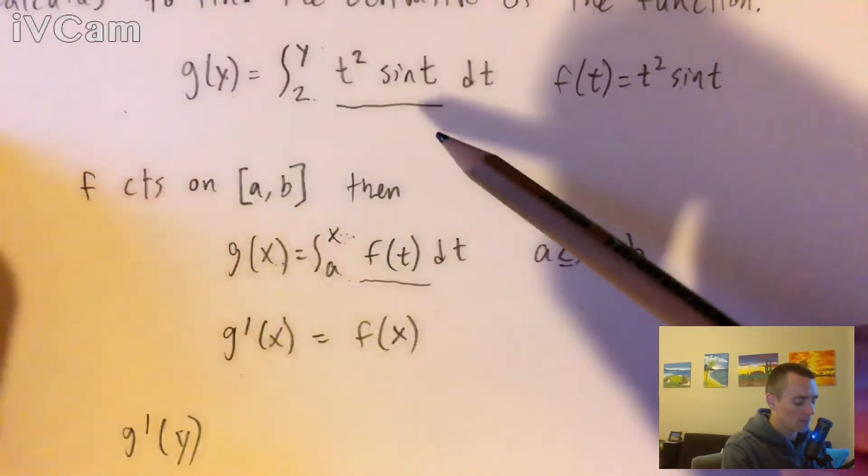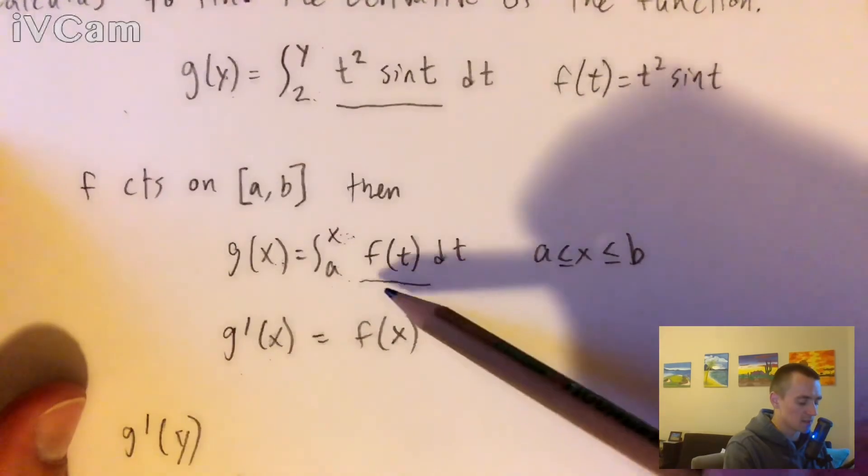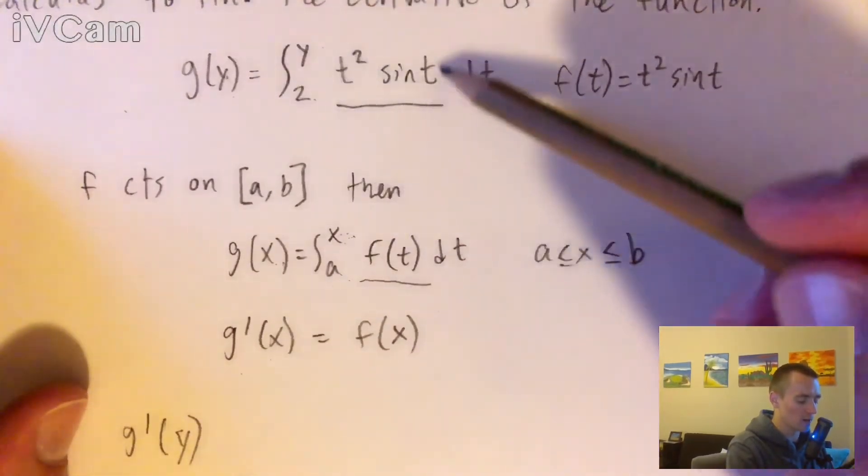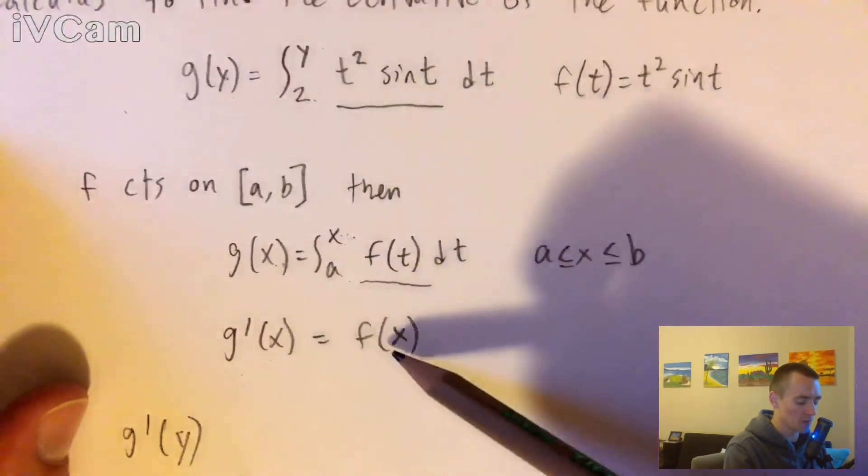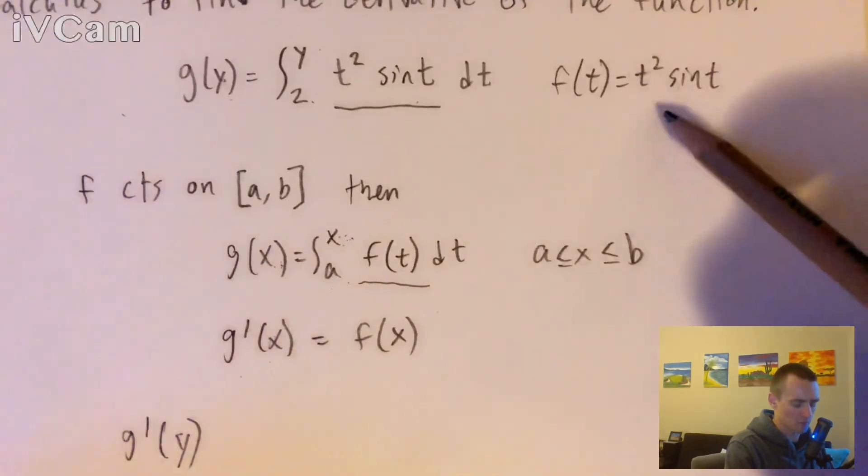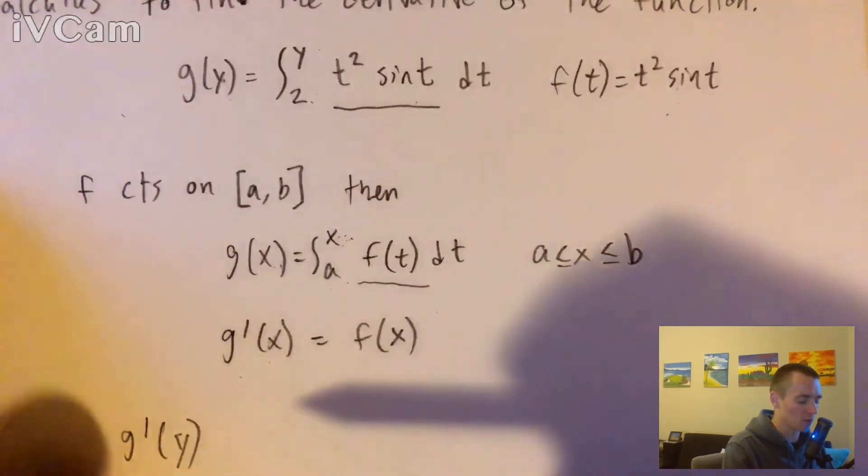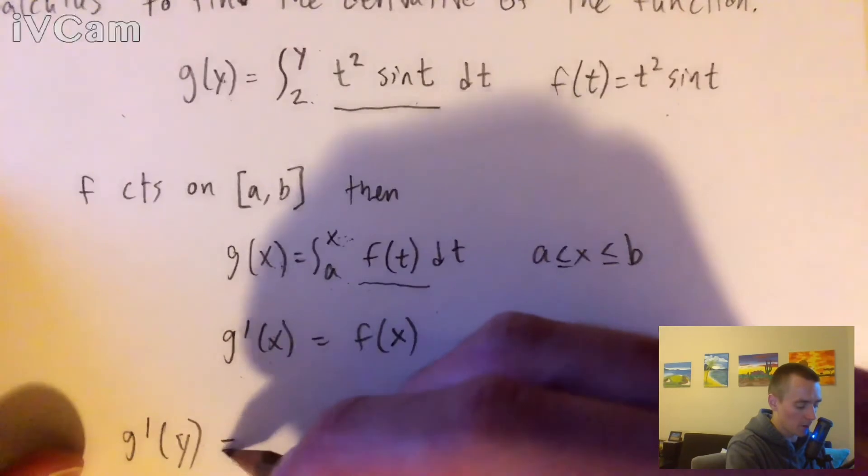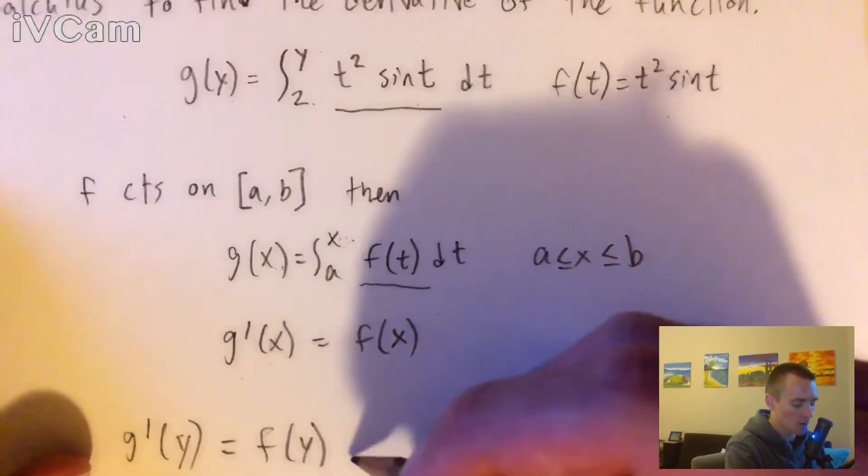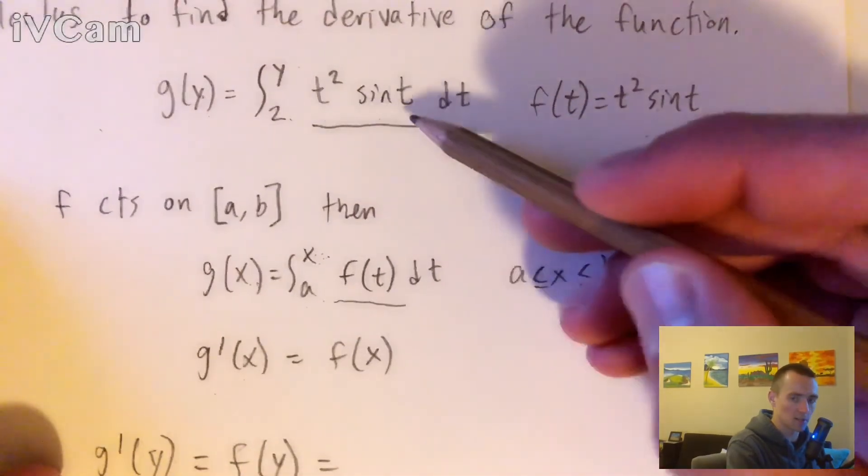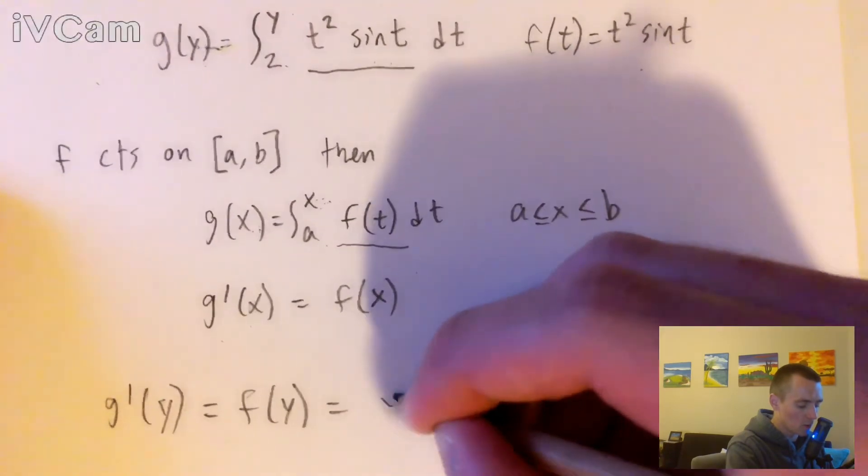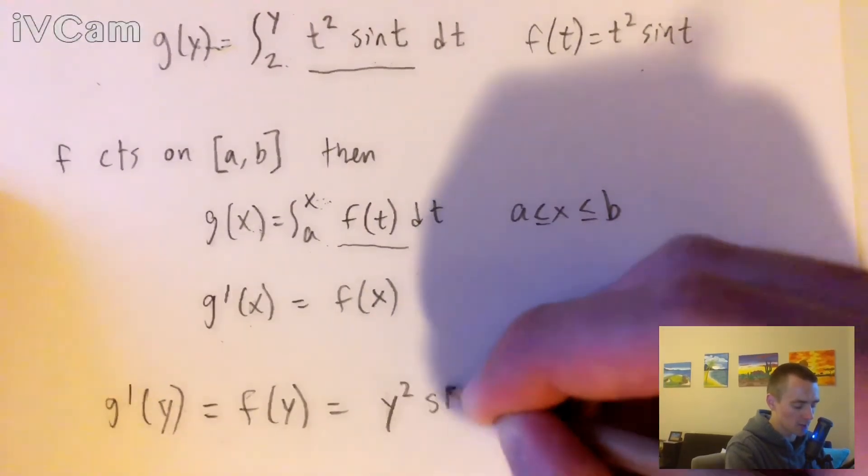So as a result, basically since this kind of format here matches up with exactly what we're given here, we know that the derivative of this thing would just be whatever this function is in here, whatever our f of t is. But obviously we need to convert it to the right variable. So doing that is just going to give us g prime of y is just f of y, which is basically just taking this t squared sine of t and replacing our t's with a y. So that just gives us y squared times sine of y.